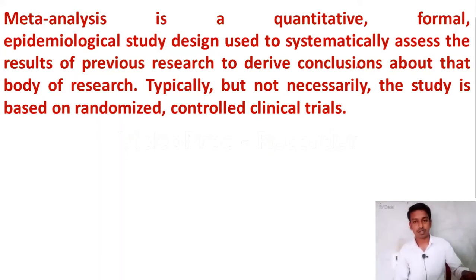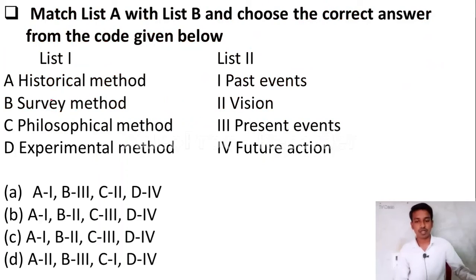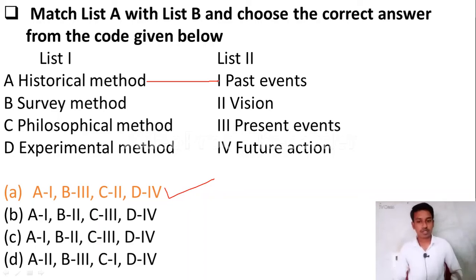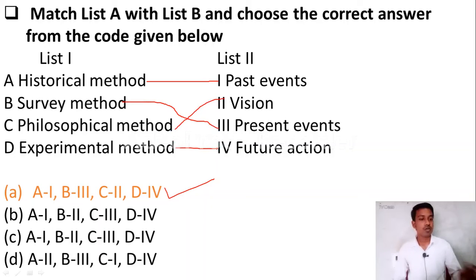Let us go to the next question — another match the following. Option A — historical method; Option B — survey method; Option C — philosophical method; Option D — experimental method. List 2: past event, vision, present events, future action. The right answer is Option A. Historical method is related to past events. Survey method is related to present events. Philosophical method is related to vision. Experimental research is related to future action.